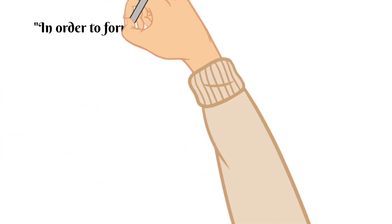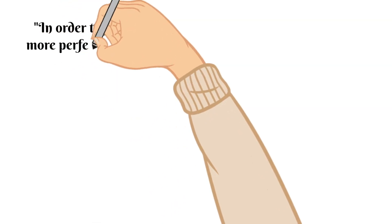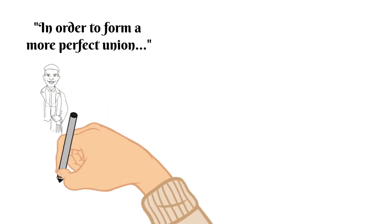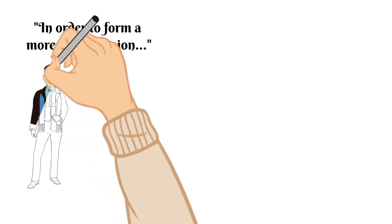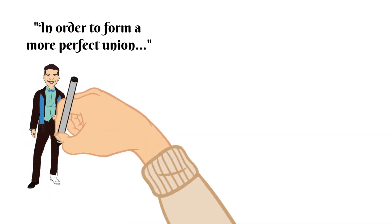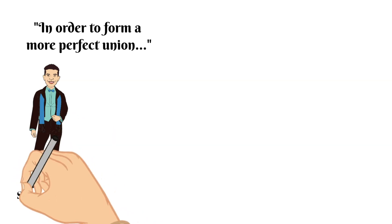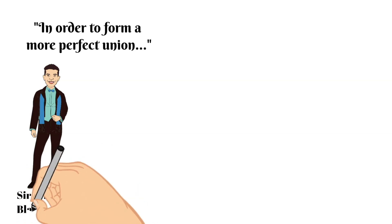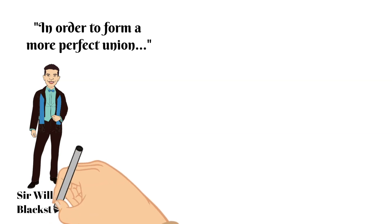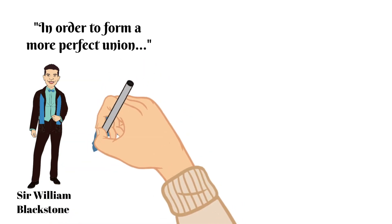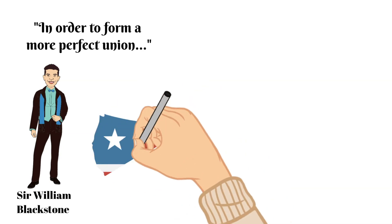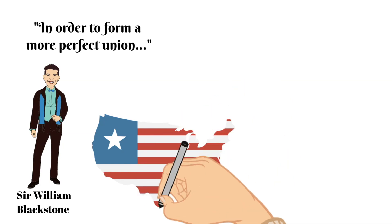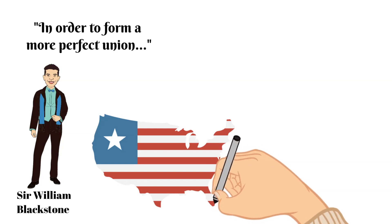Next it says 'in order to form a more perfect union.' At this time a man named Sir William Blackstone had stated that the Constitution of England was perfect but steadily improving. So many historians believe that this phrase 'a more perfect union' is a nod back to Sir William Blackstone's writings. Other historians believe that 'a more perfect union' simply meant that the United States was going to become a better union than before the Constitution.